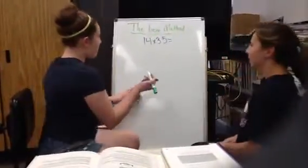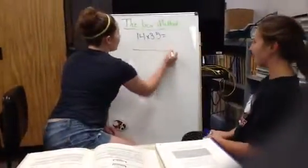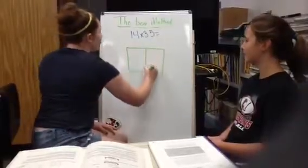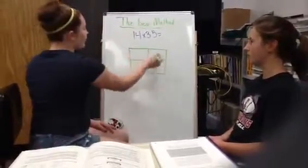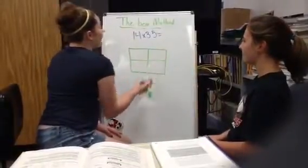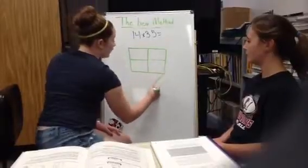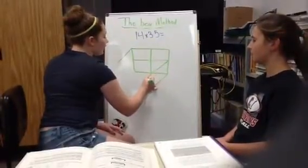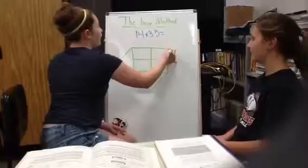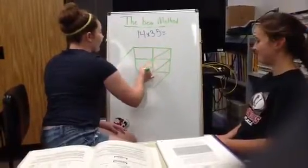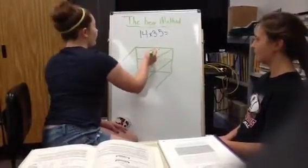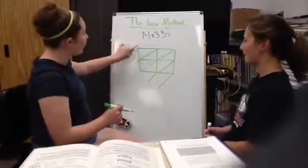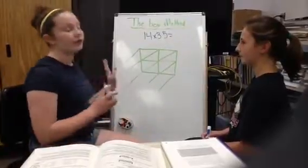First, we'll tell you how to set it up. You draw a box, or a rectangle, and then you make it look kind of like a square window, so you have four squares. Then you make a line out here, and another line out here. You kind of divide this box in half, but make sure the line keeps going. Then you divide these two boxes in half, and make sure this is the longest line. Do the same thing for this box and make the line longer. Make sure that your lines are always on the left side of your box, or else it just won't work.